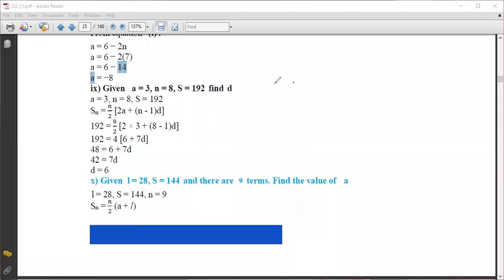In this problem, we are given a = 3, n = 8, and s = 192. We need to find d. First, let's write the formulas.